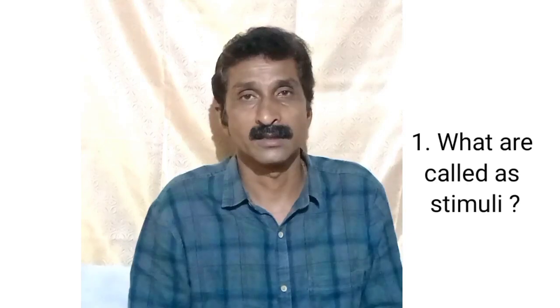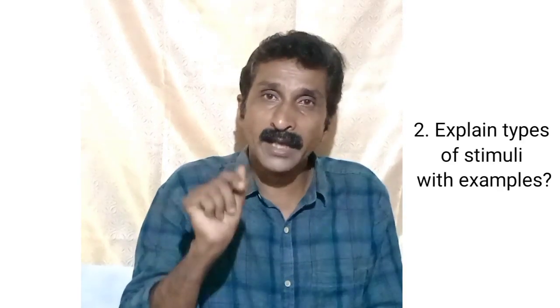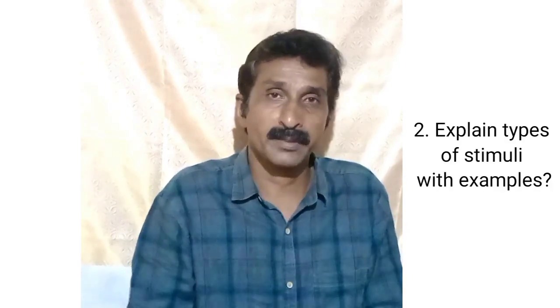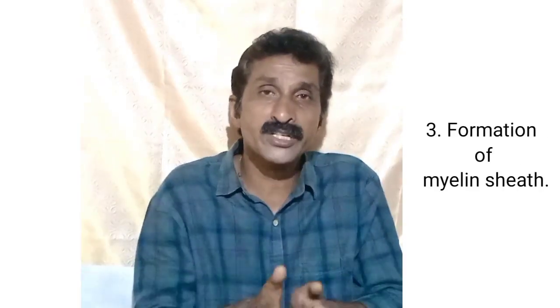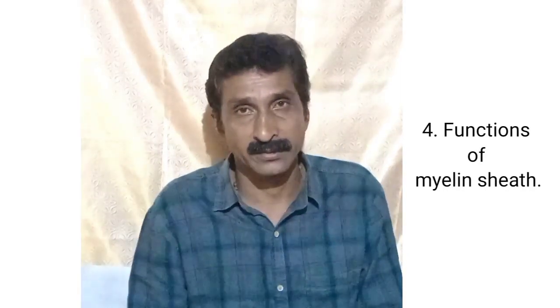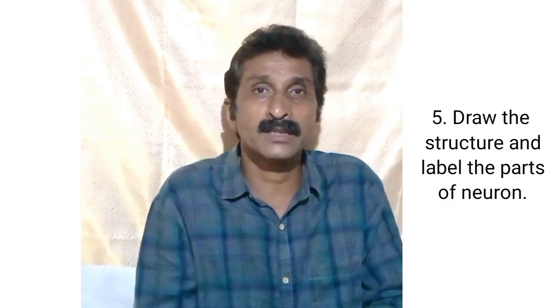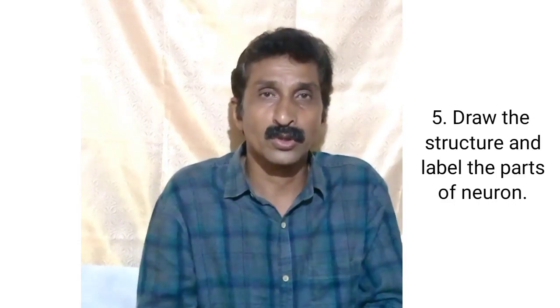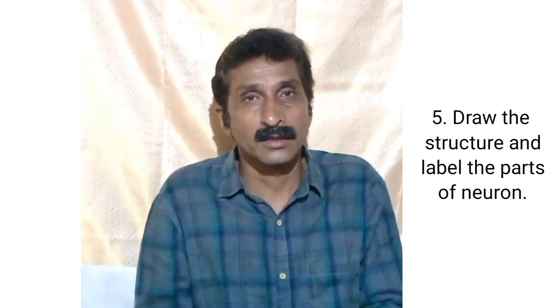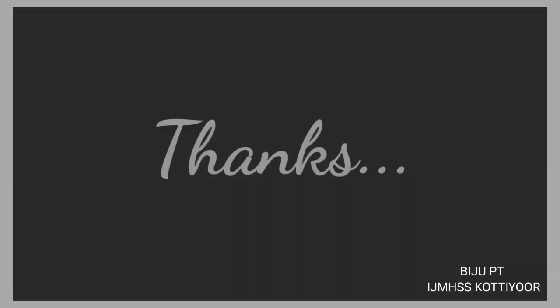Note down some questions. Question number one: What are called as stimuli? Question number two: Explain types of stimuli with examples. Next question: Formation of myelin sheath. Next question: Functions of myelin sheath. Next question: Draw the structure and label the parts of a neuron.